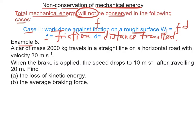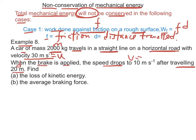Example 8. A car of mass 2,000 kg traveled in a straight line on a horizontal road with velocity 30 m per second. When the brake is applied, the speed drops to 10 m per second after traveling a distance of 20 m.